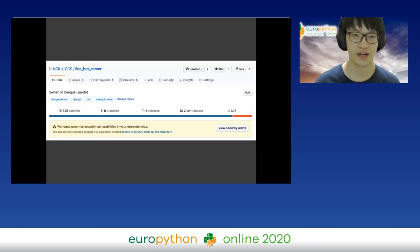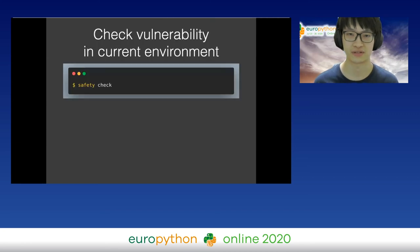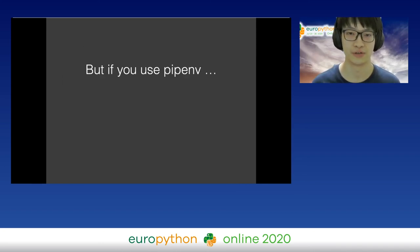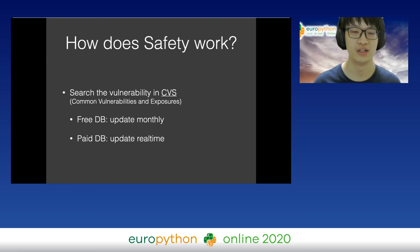For security issues, you might have seen warnings on GitHub telling you that some of your libraries have security issues and you should upgrade to a certain version. You can check this locally through Safety. You can check vulnerabilities by running safety check — in this example it tells me that PyCrypto 2.6.1 might be vulnerable, so I need to update to a higher version. But if you are using pipenv, you can just run pipenv check. Safety searches the CVE database for known vulnerabilities.